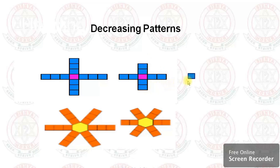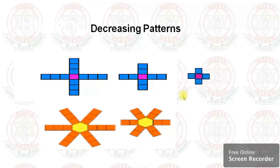So next will be one middle pink rectangle and around that only one, one, one, one will come. Next you can see a hexagon — around that here three rectangles, around that two rectangles.